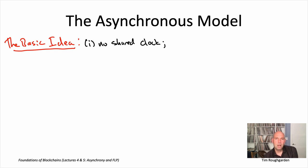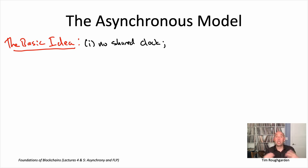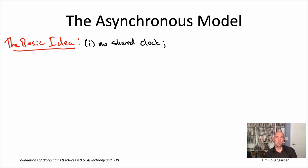The second assumption in the synchronous model was guaranteed message delivery — guaranteed to arrive one time step later. Or, as we saw last video, more generously, there's an a priori known bound delta, and every message sent is received at most delta time steps later. So here we want to be the total opposite. We're going to make literally no assumptions about message delays.